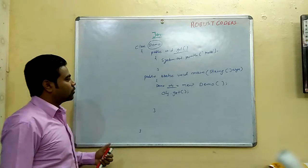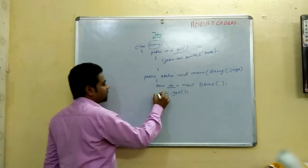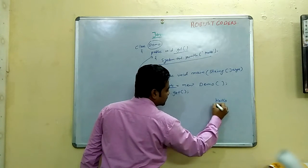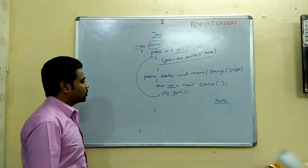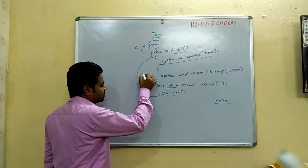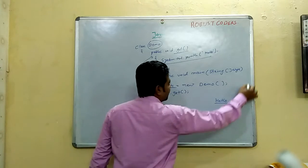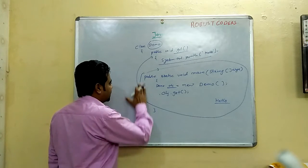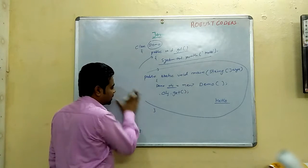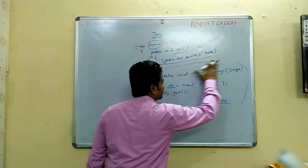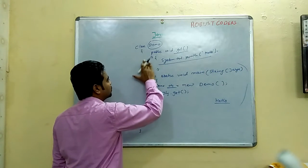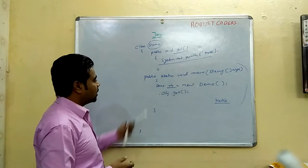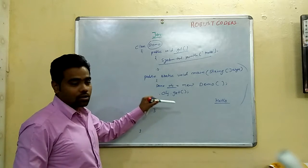Finally, the output - it is the method which can be executed. Let's discuss this method and what we can discuss based on the program. What is the main method, and what is the object declaration and initialization?